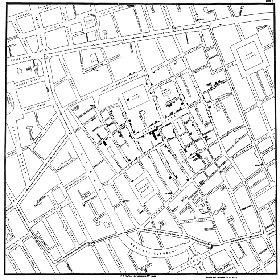Historical geography is the study of the human, physical, fictional, theoretical, and real geographies of the past. Historical geography studies a wide variety of issues and topics. A common theme is the study of the geographies of the past and how a place or region changes through time. Many historical geographers study geographical patterns through time, including how people have interacted with their environment and created the cultural landscape.